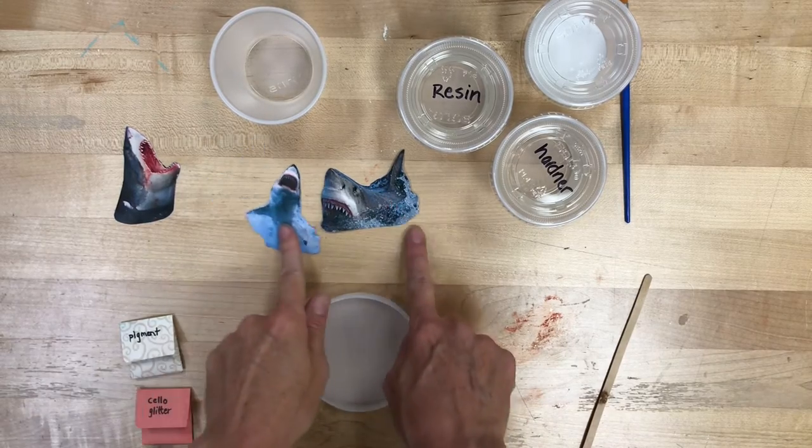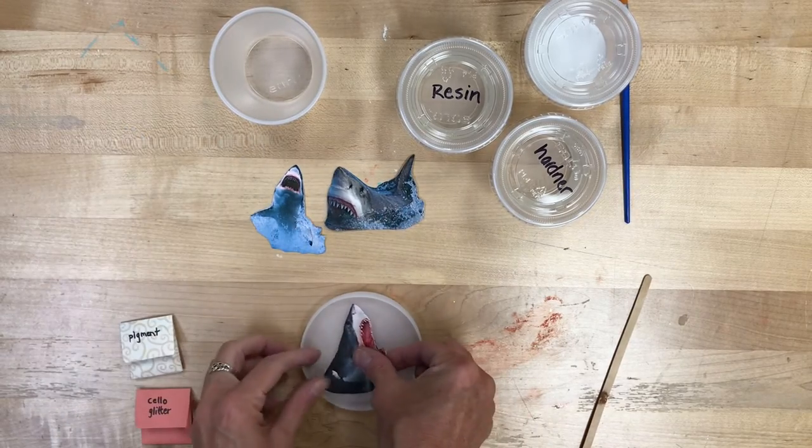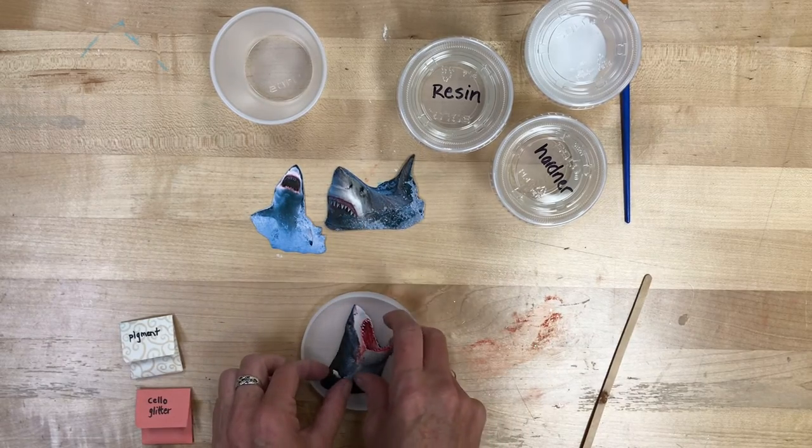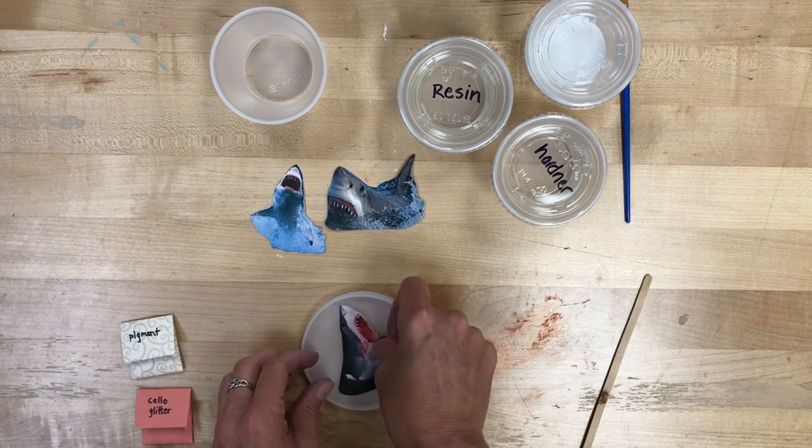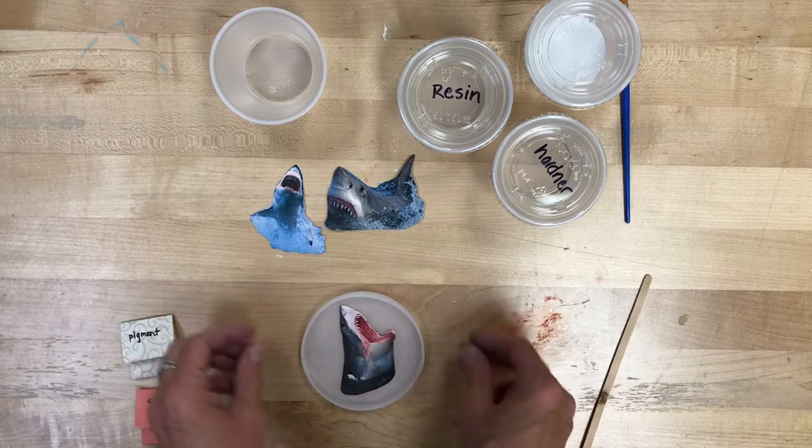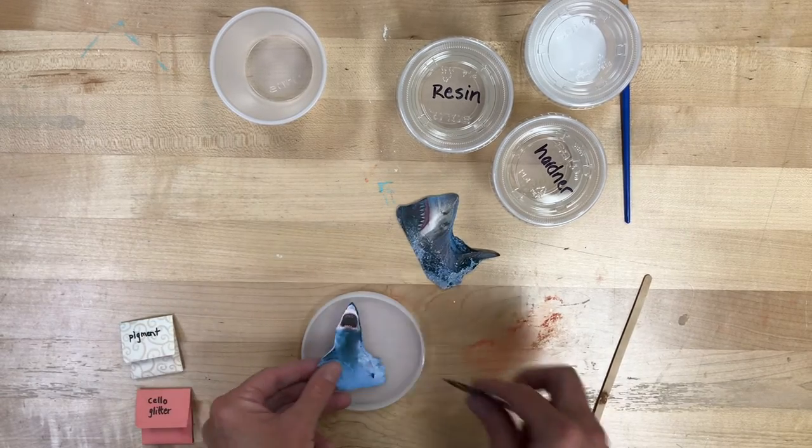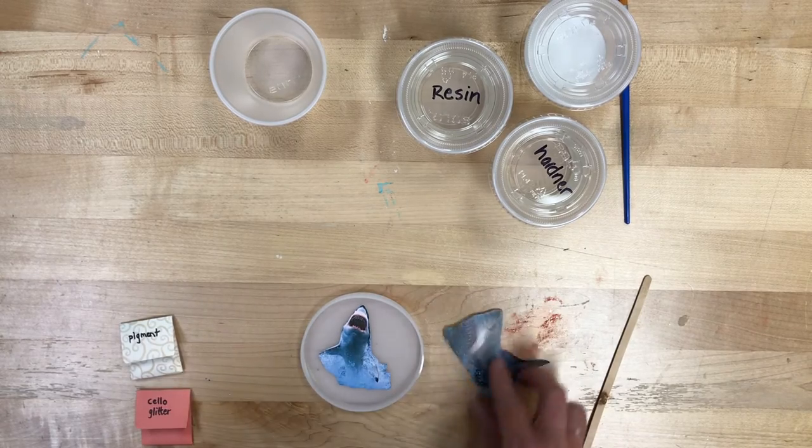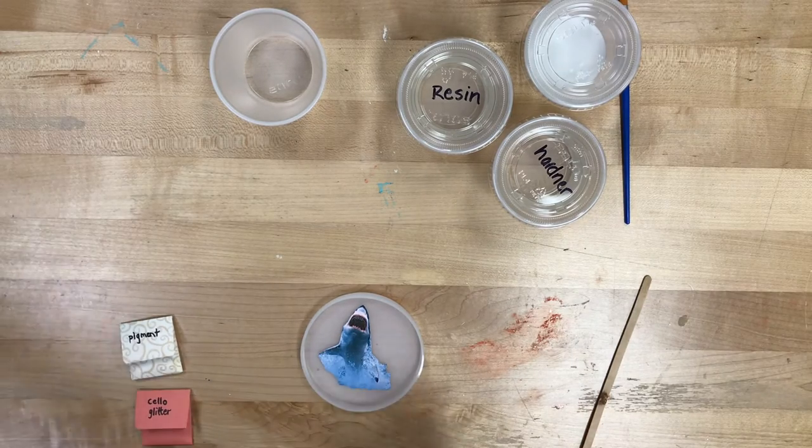Okay, so we are going to start out with that coaster mold, and the first thing you've got to do is figure out which shark you want to use. They should all fit in there. It's just a matter of personal taste, which one you like the best. And I think I like this kind of tiny one leaping out of the water.